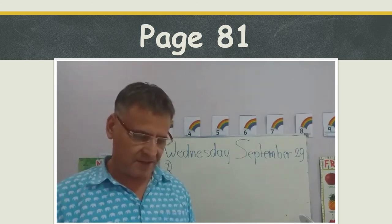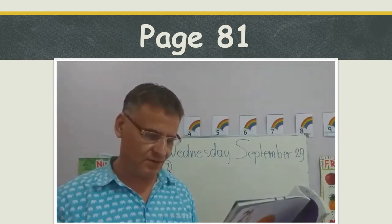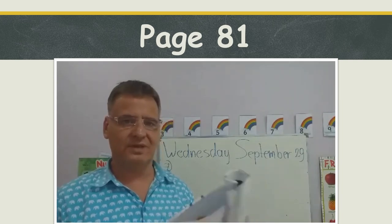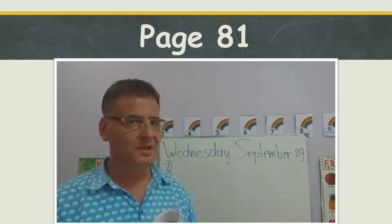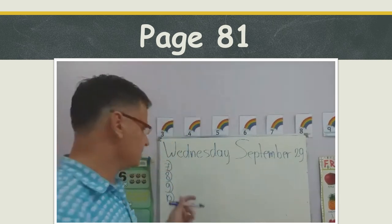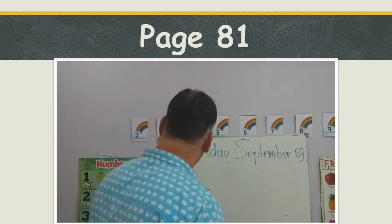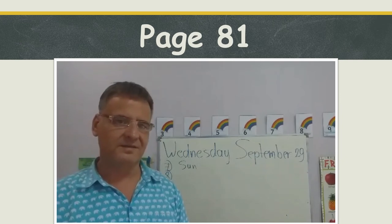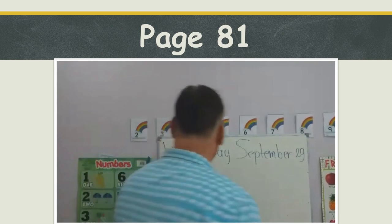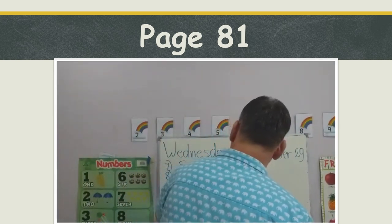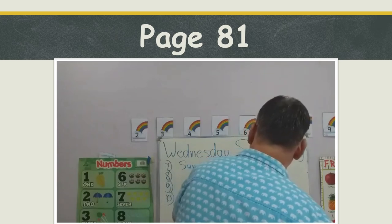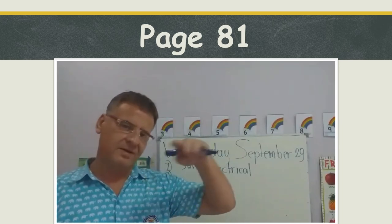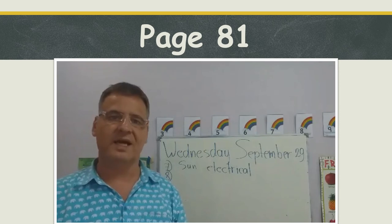Number seven needs two answers. Solar panels change light energy from the sun into electrical energy. The sun shines on the panels, a chemical reaction occurs, and the sunlight is changed into electrical energy.